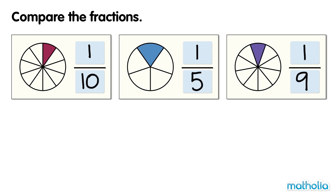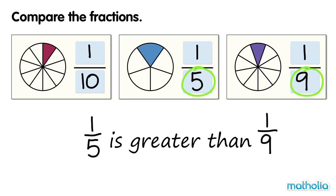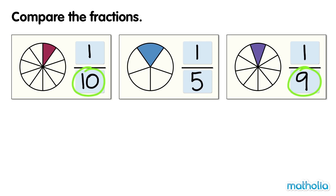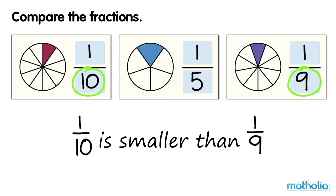All of the fractions are unit fractions. Let's compare the fractions by comparing their denominators. Five is smaller than nine, so one fifth is greater than one ninth. Ten is greater than nine, so one tenth is smaller than one ninth.